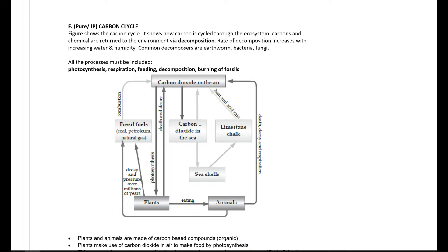Plants are subsequently consumed by animals. All organisms — plants and animals — will undergo death and decay, forming fossil fuels. In modern times we use fossil fuels for combustion, which returns carbon dioxide back into the atmosphere. Both plants and animals also undergo respiration and decay, all of which contribute carbon dioxide back into the air.